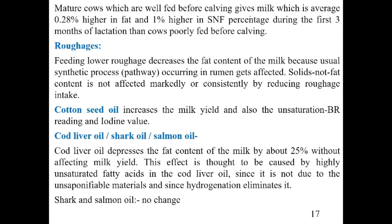It has been reported that mature cows which are well fed before calving give milk that is on average 0.28% higher in fat and 1% higher in SNF percentage during the first three months of lactation, compared to cows poorly fed before calving.